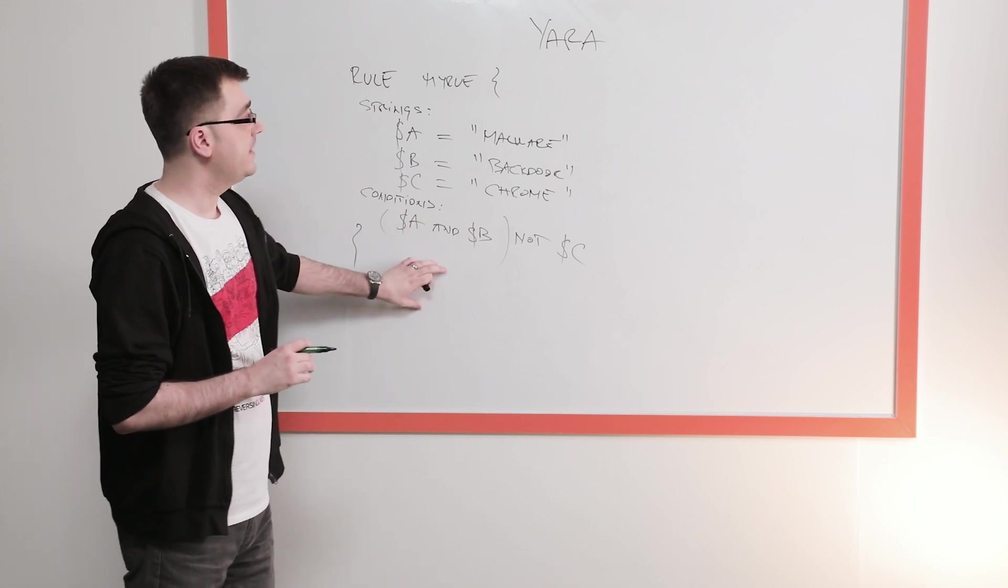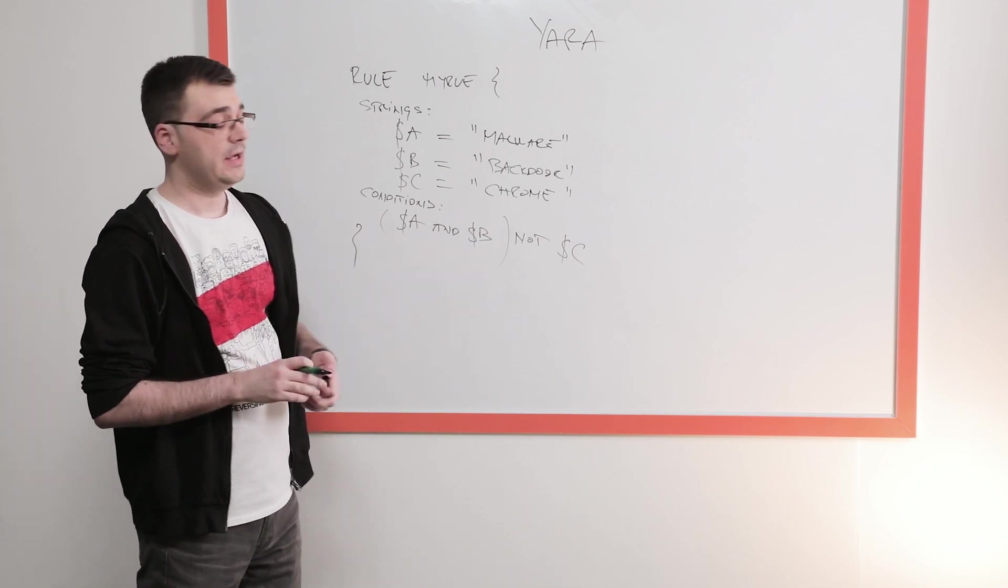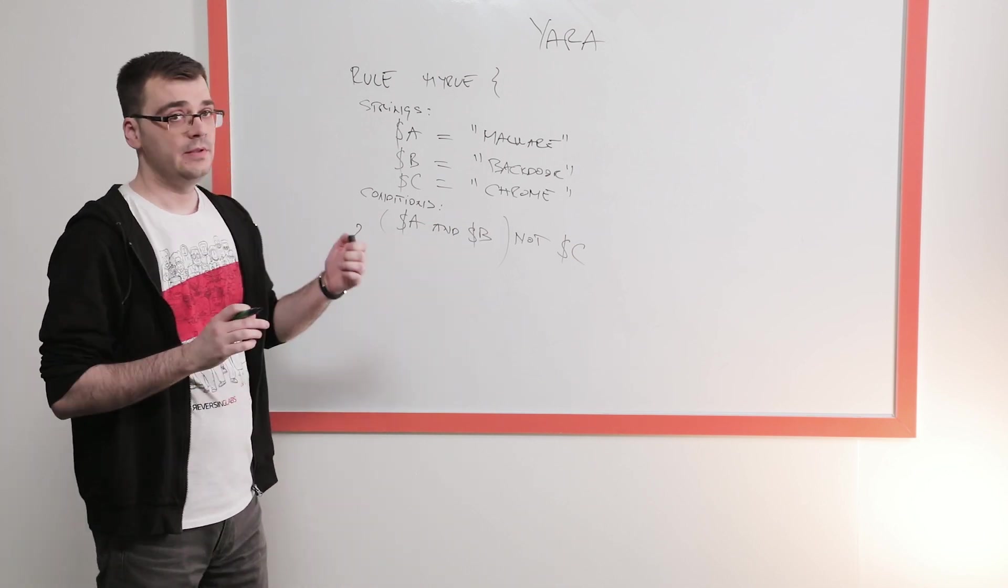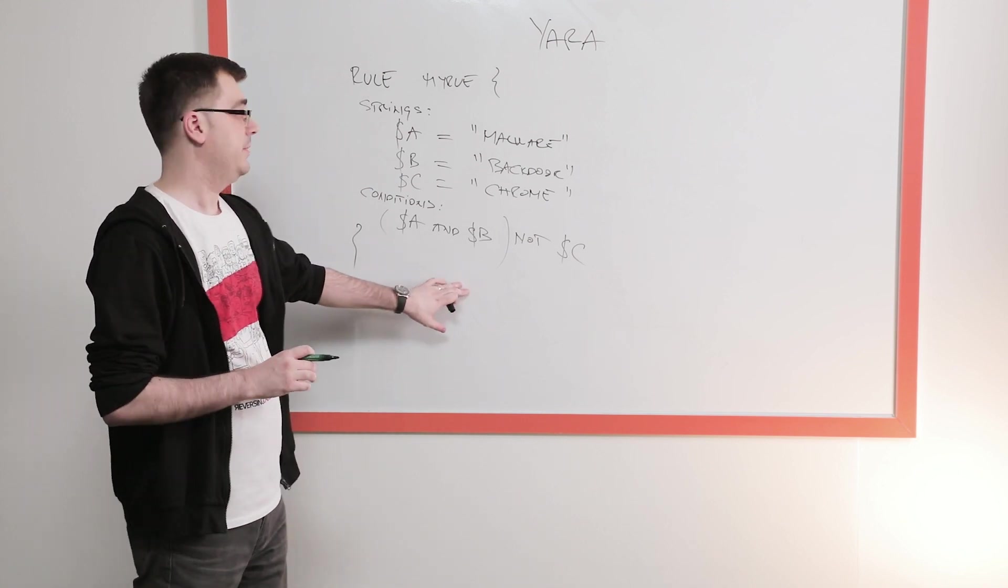And when we're detecting malware, we don't want to have false positives. That's why platforms like reversing labs A1000 help the analysts create these rules and test them before they pushed into the production.